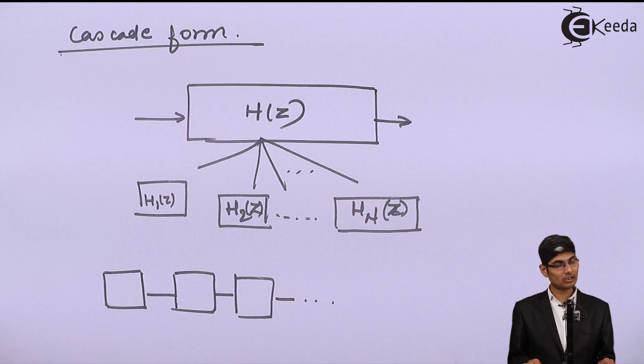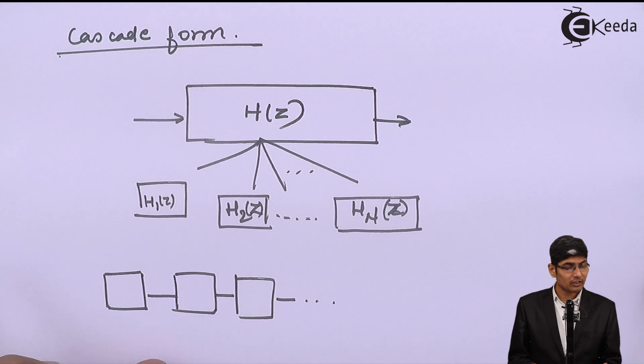Regarding lattice and frequency sampling, we need a more detailed understanding of these two structures because they are more complicated and not straightforward. Frequency sampling actually uses a proper derivation which gives the structure out of its derivation. For now, the three structures — direct form, cascade, and linear phase — all involve using H(z) directly with some special conditions. This is all about realization of an FIR filter using the three basic methods. Thank you.